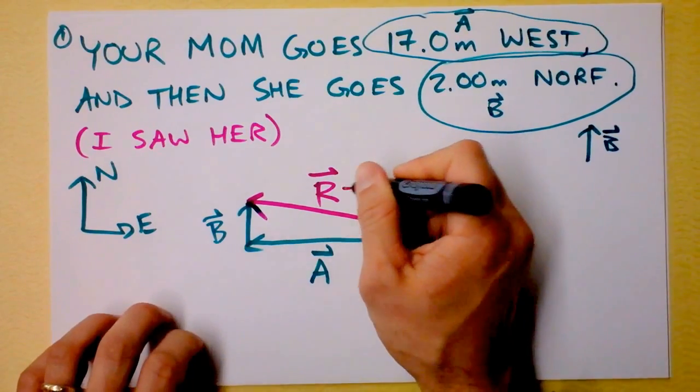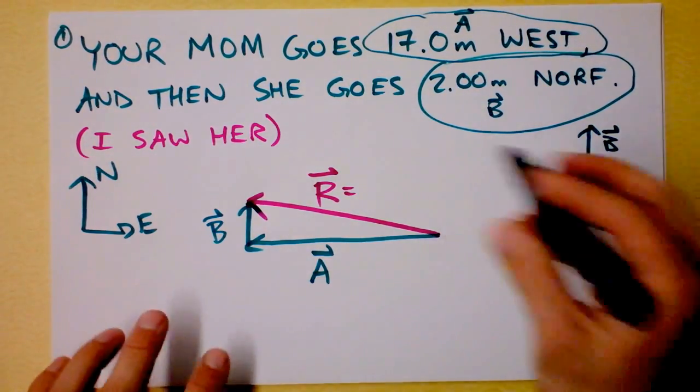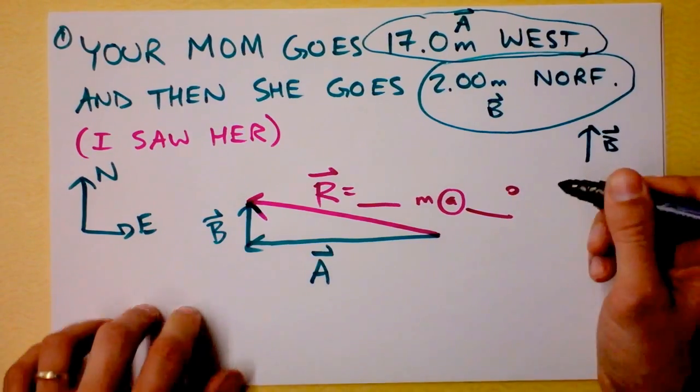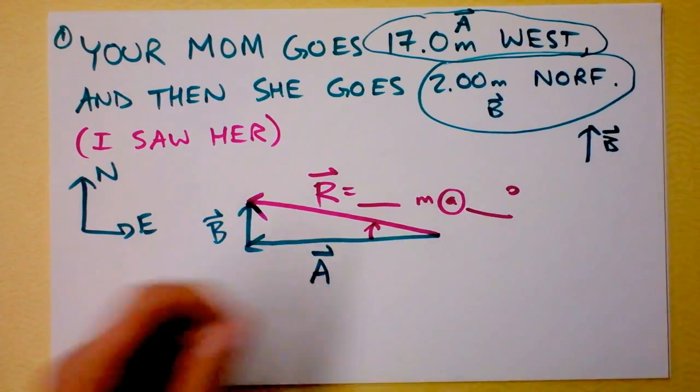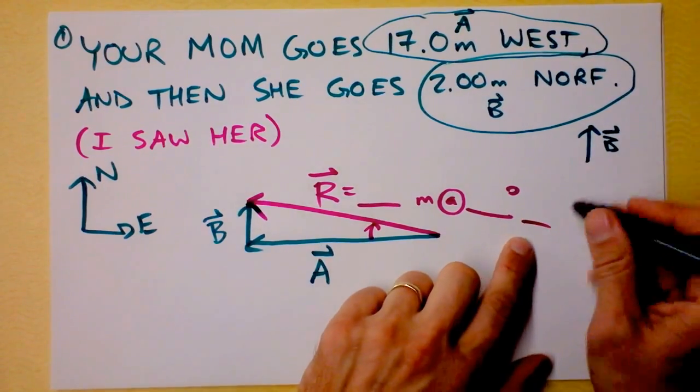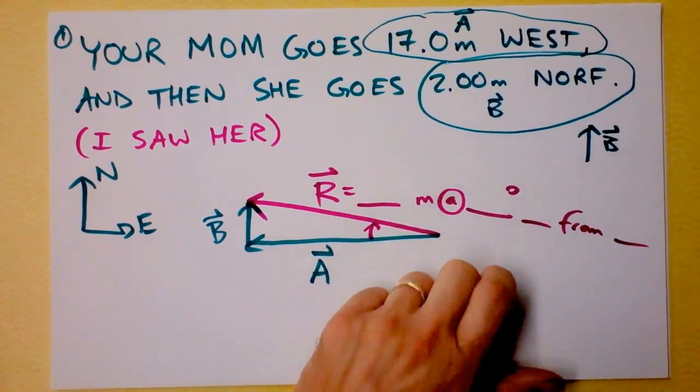R now starts from the base of A and goes to the tip of B. This is our resultant R, and we're trying to find out everything about R. So it's going to have units of meters, blah blah blah meters, at what angle? Some degree, some angle, probably that angle right there, which we'll be able to find using math. And something from something.